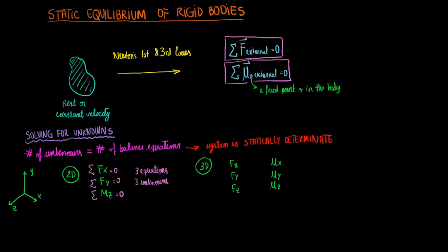As a result, we can get up to six balance equations in 3D, and they are all equaling zero in static equilibrium. This means that we can solve for up to six unknowns.